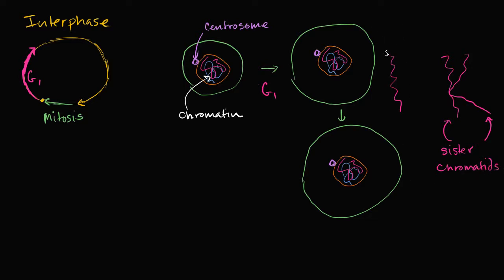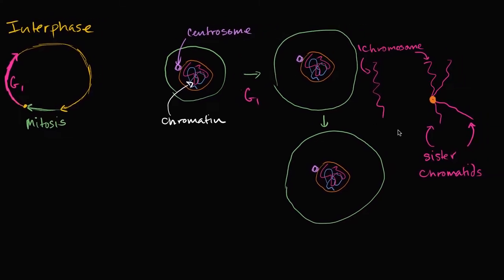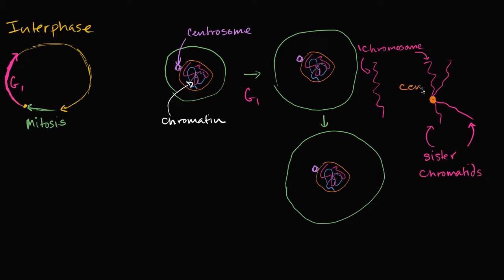Either way, this is one chromosome right over here. Later on when we go through mitosis, we'll see that these two sister chromatids get split apart — they're no longer connected — and at that point we refer to each of them as an individual chromosome. Now you might be wondering: is there a word for this place where the two sister chromatids are connected? And the answer is yes — that word is centromere, not to be confused with centrosome. So that right over there is a centromere.